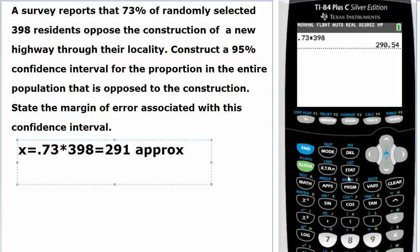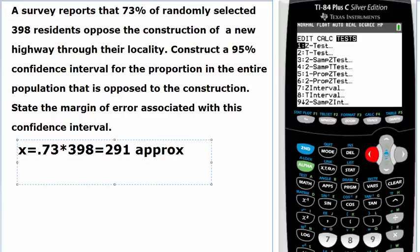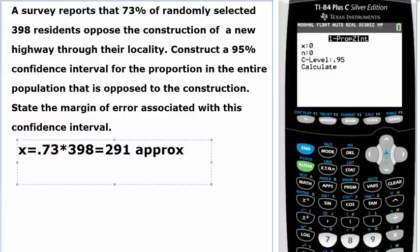We will go back to stat and then scroll down or type a right away. We go for one proportion z interval. This is 291 and here we have 398. It's already 0.95, but if you have to have another level, you can go ahead and change it. We will go ahead and calculate.